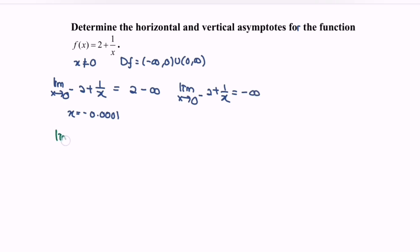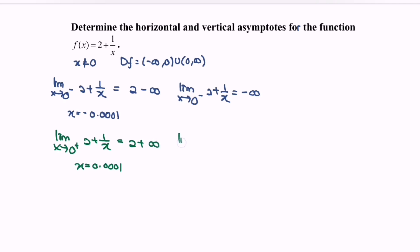The limit when x approaching 0 from the right for the function 2 plus 1 over x. The suggested test value will be x equals 0.0001. If we substitute, we will have 2 plus 1 over 0.0001, which gives a very big positive number. So the limit when x approaching 0 from the right gives us positive infinity.